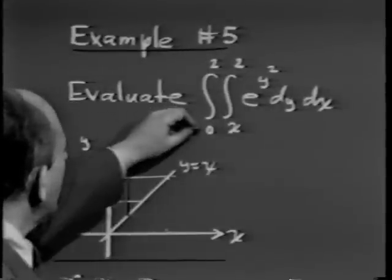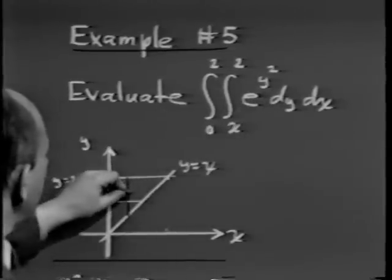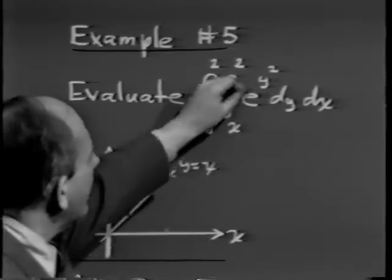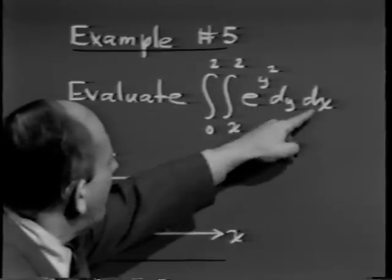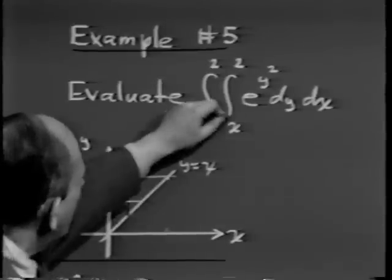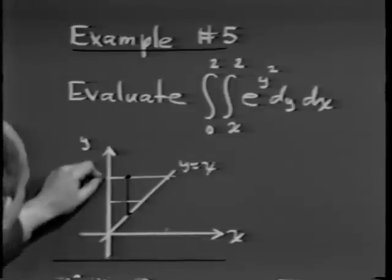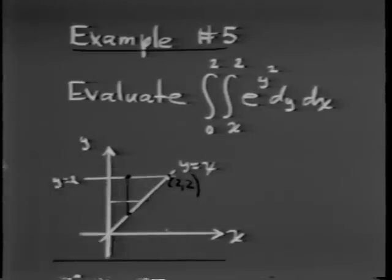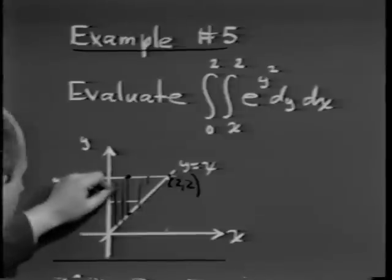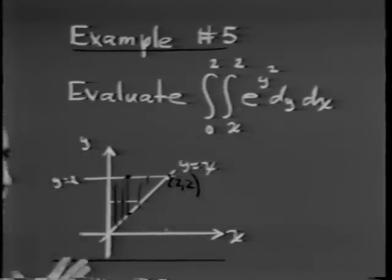Let me evaluate the double integral from 0 to 2, from x to 2, of e^(y²) dy dx. Let me see what this means geometrically. I can think of this as a plate R whose density at point (x,y) is e^(y²). For a fixed value of x, y goes from y = x up to y = 2. And x can be any place from 0 to 2, which corresponds to the point (2,2) where the lines intersect. So the region R is this triangular region.